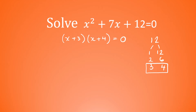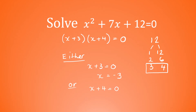We've got two numbers being multiplied together giving us an answer of 0. When we multiply two numbers together and get an answer of 0, the only way that can happen is if one of those numbers is 0. So either x add 3 is equal to 0, or x add 4 is equal to 0. If we subtract 3 from both sides, that tells us x is equal to negative 3. Or if x add 4 is equal to 0, subtract 4 from both sides, x must be negative 4.